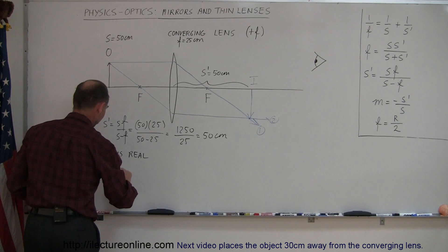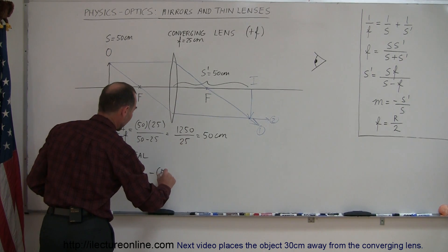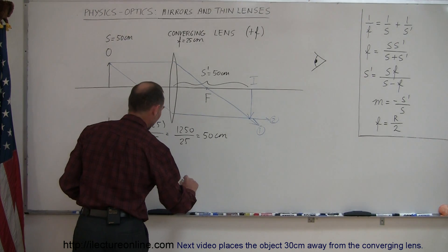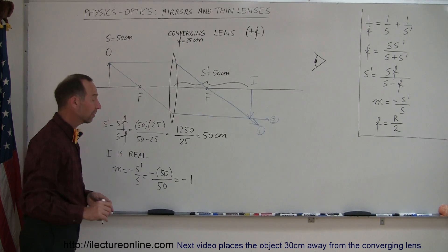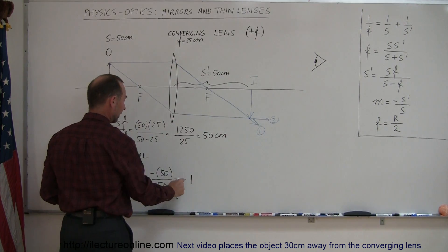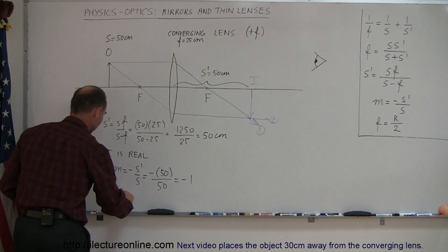Next, we want to find the magnification. M is equal to minus S prime over S. So, it's minus the image distance, which is a positive 50 centimeters, divided object distance, which is 50 centimeters, which is minus 1. That means that the image is exactly the same size as the object, and it's negative, which means it's upside down or inverted, so the image is inverted.